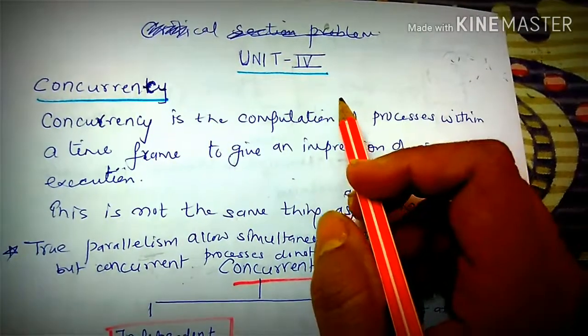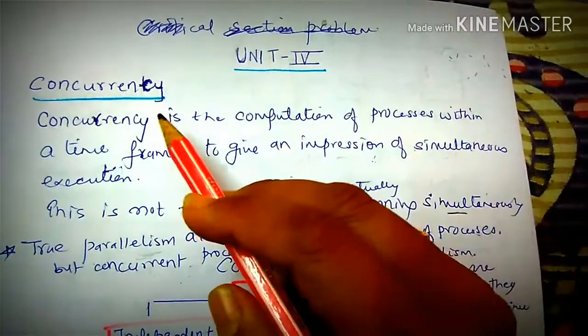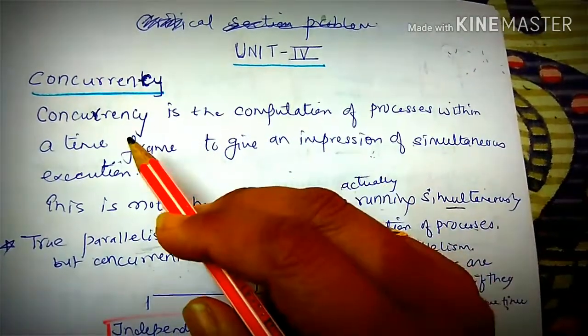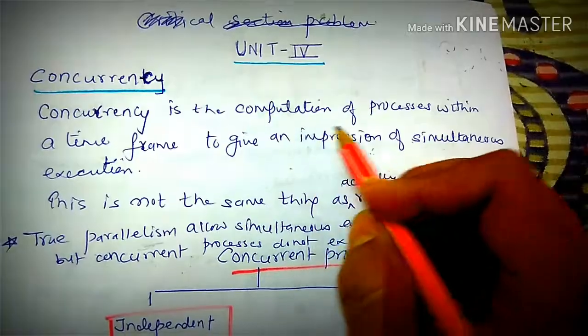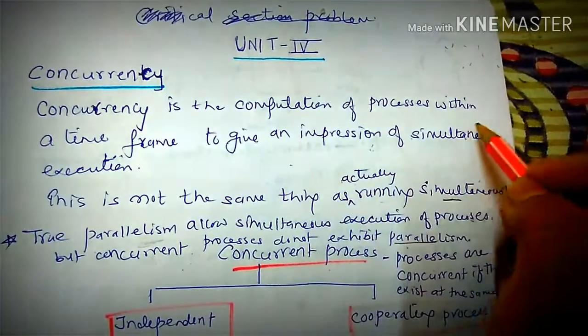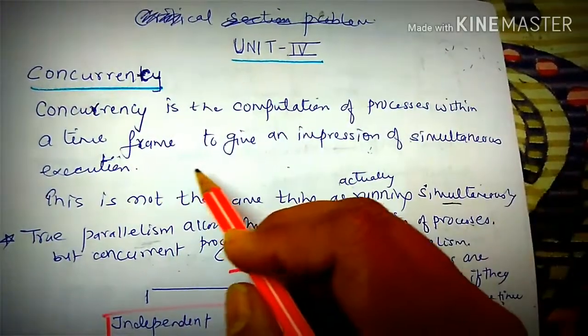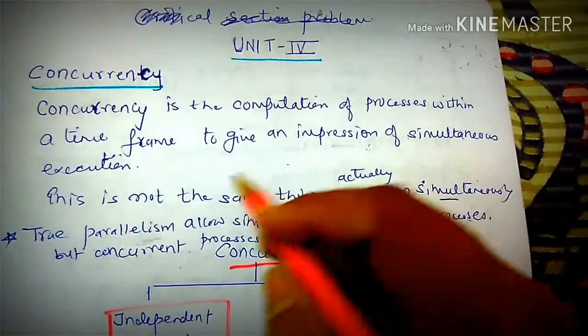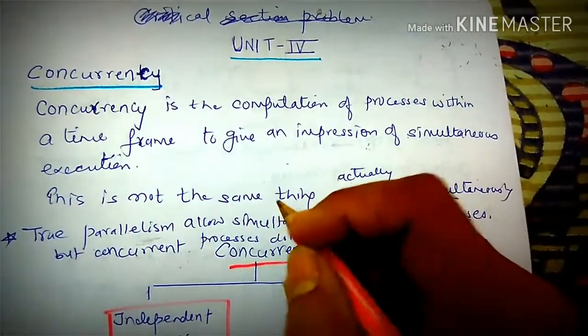We start unit 4. Its first topic is Concurrency. Concurrency is the computation of processes within a time frame to give an impression of simultaneous execution.